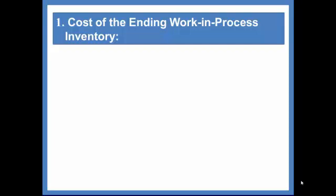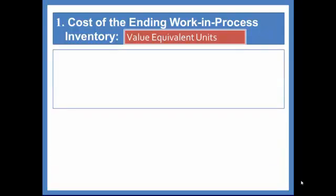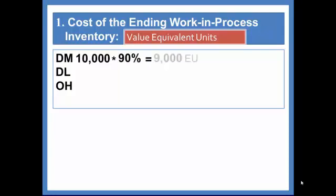First, we'll look at ending work in process inventory. When you value ending work in process inventory, be sure that you value equivalent units — you need to assign direct material, direct labor, and overhead to those units. We had 10,000 units in ending work in process, but for materials, those 10,000 units were 90% complete, so we have 9,000 equivalent units as to material. The cost per equivalent unit is $5, so these 10,000 units will have $45,000 of materials assigned to them.